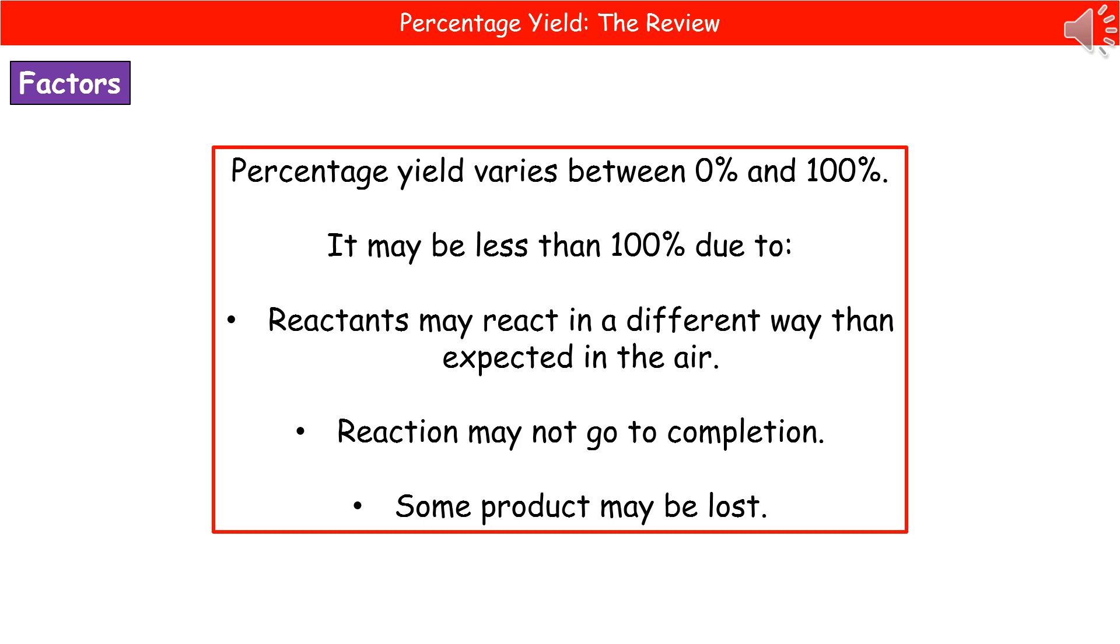And finally, some product may be lost through some means. It could be if we're transferring from one reaction vessel to another, we could have left some residue on one of them. It could be that there's some residue left on filter paper, for example. It could be that some has been lost during a fizzing reaction. So make sure that you remember those three different ways that we can lose some of our product.